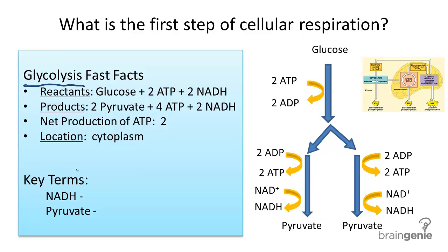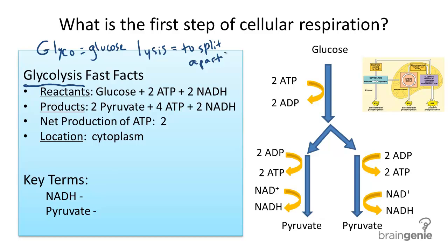First, let's examine the word glycolysis for its meaning: glyco and lysis. Glyco looks like glucose — it refers to glucose. And lysis, have you heard that word before? This means to split, or split apart. You may have heard hydrolysis, which would mean to split apart water, or hemolysis, which means to split blood cells, and so on. So when you think of glycolysis, just know that it means splitting glucose in half.